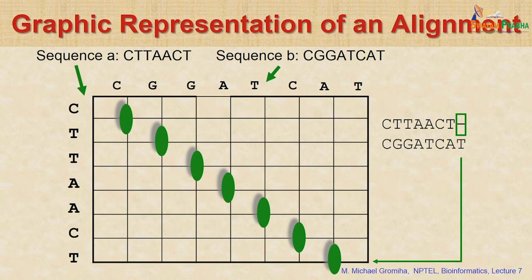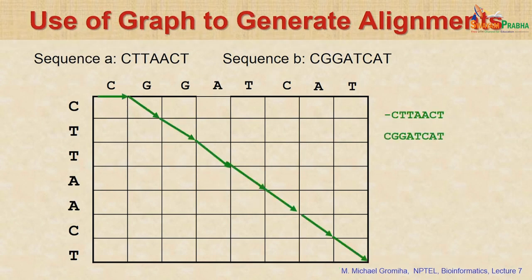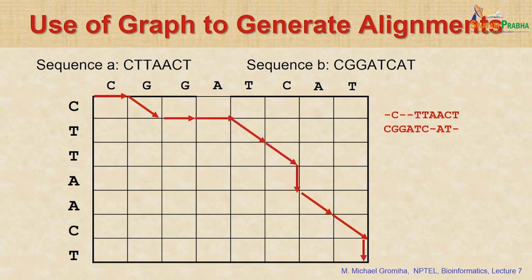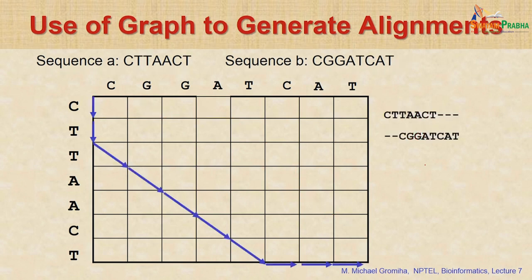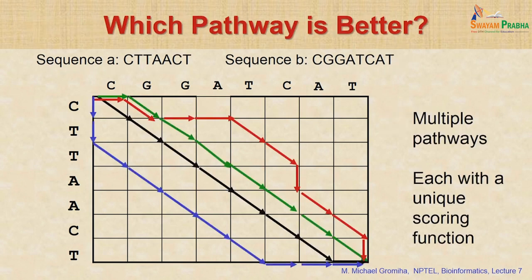If you align the sequences in a different way — not caring about matching or mismatching score, just trying to align — you can have a gap at the last position, or a gap at the first position with all others aligned. There can also be one gap at an intermediate position with some residues aligned and then 2 gaps and 3 aligned residues and so on. There are multiple pathways to align sequences.